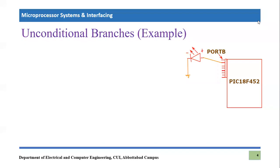Let's do some examples for unconditional branch instructions, focusing on the short branch BRA. We will use the same example from the last lecture: an LED connected to Port B of the PIC microcontroller, specifically to pin RB1 — bit number one of Port B. We will write code to turn the LED on and, this time, also turn it off.